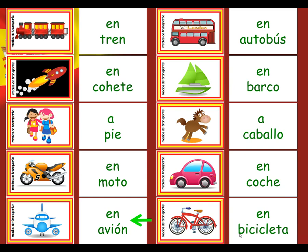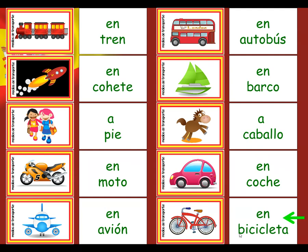Have you spotted that avión is like the words aviator and aviation, all to do with planes in English? En autobús is by bus. En barco is by boat. A caballo — on horseback is probably the best in English. En coche is by car. And finally, en bicicleta is by bike. Sometimes you can shorten bicicleta to bici for bike.